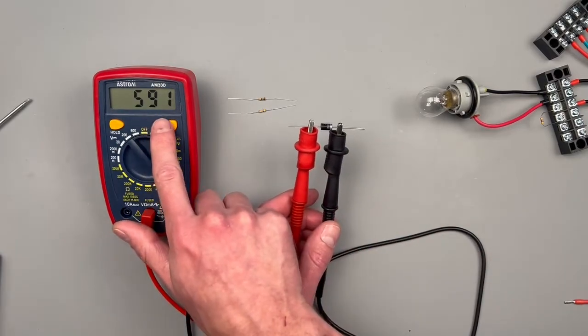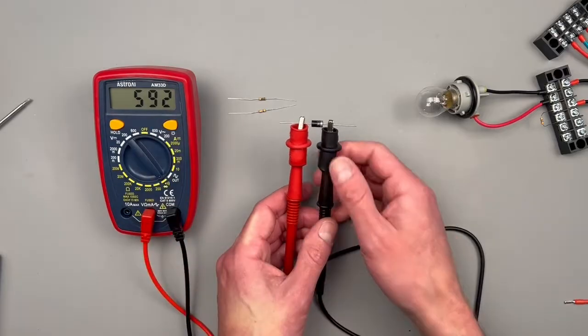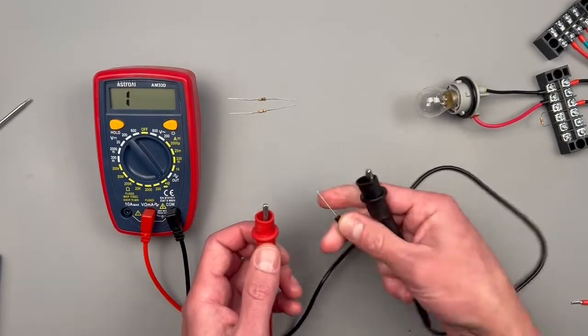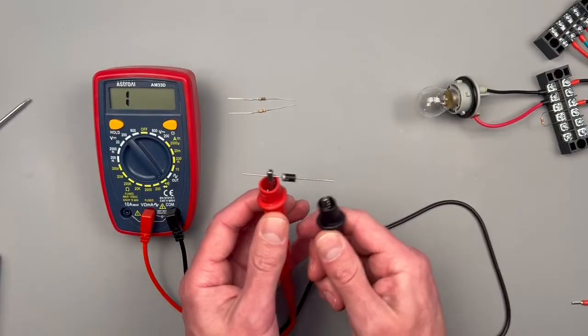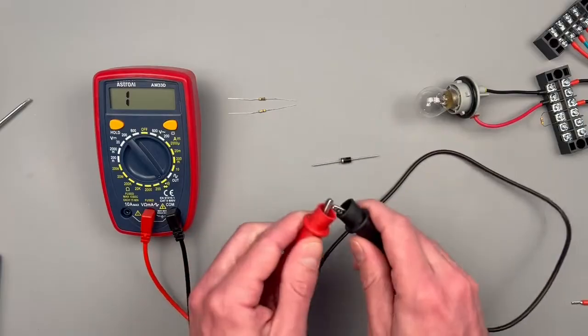This reading is going to be in millivolts too, so this is 592 millivolts of voltage drop across our diode. Then we can go ahead and swap it and it should be an open. There shouldn't be any continuity this way. Showing a one indicating an open, whereas obviously if there was continuity we would have a tone.